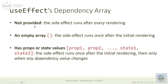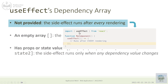The change of a dependency is based on the identity of the object representing that dependency. We added three options - very seldom we need to leave out the dependency array, and in this case the effect runs every time the component is rendered. That's not very useful because we have no control over when the component is rendered, so we have an unpredictable side effect.